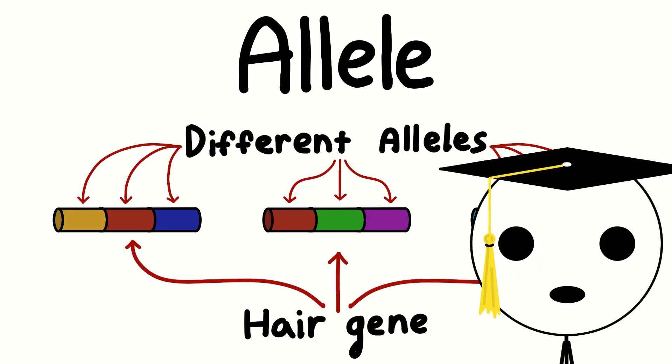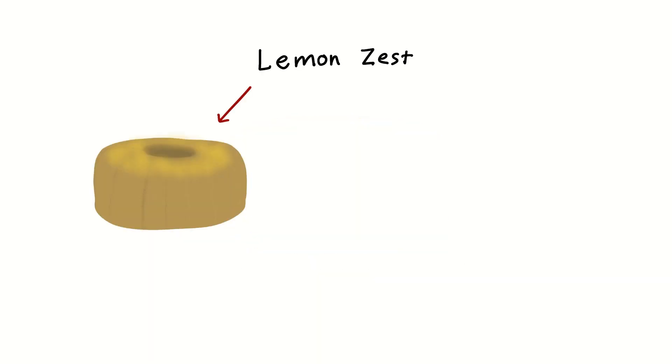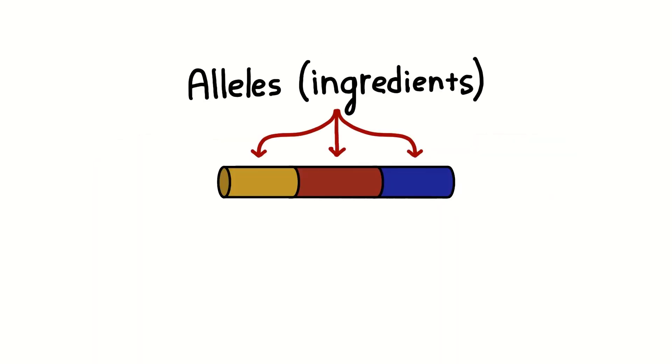So brown, black, blonde—most of us have that gene. It's like if we all brought a lovely bundt cake to the party, but yours had lemon zest and mine had orange zest. Same dish, different ingredients. Alleles make up the gene.